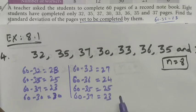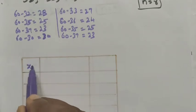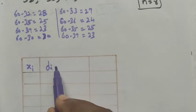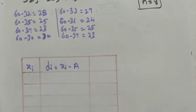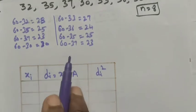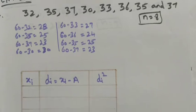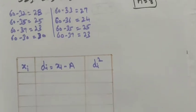We are going to use the assumed mean method to find the standard deviation. The table columns are xi (the data values) and di = xi minus A, where A is the assumed mean, and di squared. This is ungrouped data, so the formula for standard deviation is: sigma = square root of (summation di² divided by n) minus (summation di divided by n) whole squared.